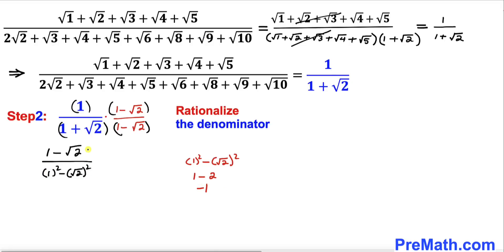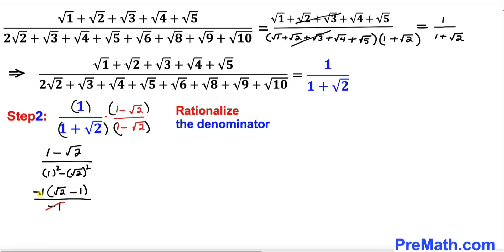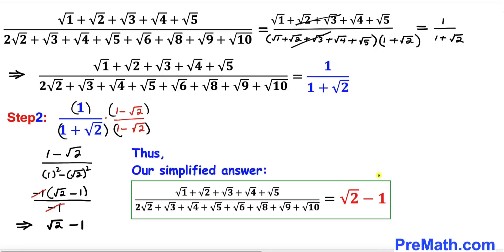The denominator simplifies to negative 1. Now focusing on the numerator, I can factor out negative 1 to get square root of 2 minus 1, divided by negative 1. The negative 1's cancel, so this whole expression simplifies to square root of 2 minus 1. That's our answer — the simplified expression turns out to be square root of 2 minus 1. Thanks for watching and please don't forget to subscribe to my channel for more exciting videos.